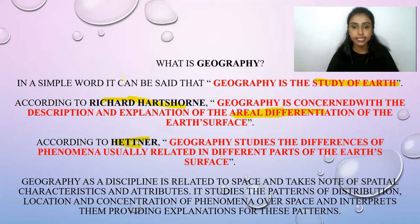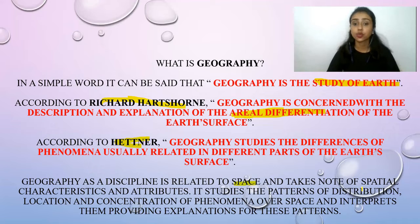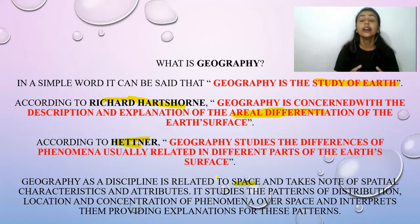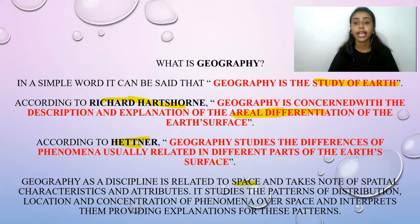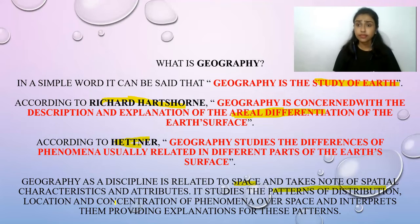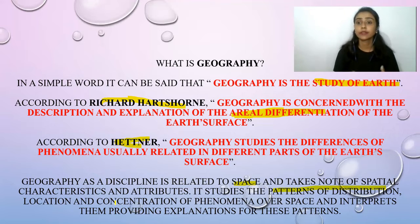Geography as a discipline is related to space — space meaning a region, a particular place — and takes note of the spatial characteristics and attributes, meaning that particular region's characteristics: what type of region it is, and if people live in that region, how are they living there. It also studies the pattern of distribution, basically particular settlement — whether there is a rural area or an urban area, and how do people live in that region.